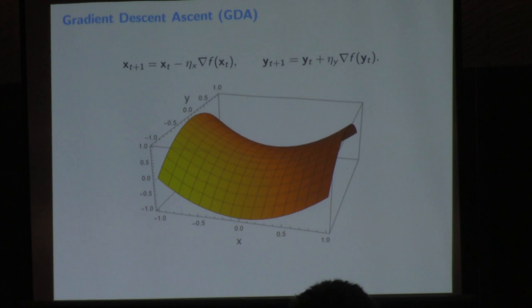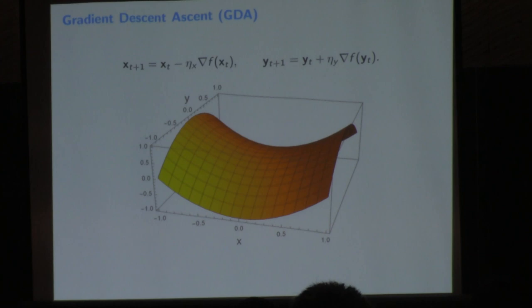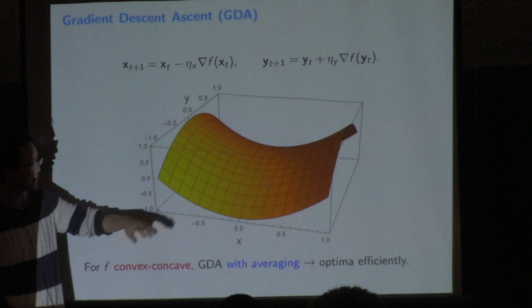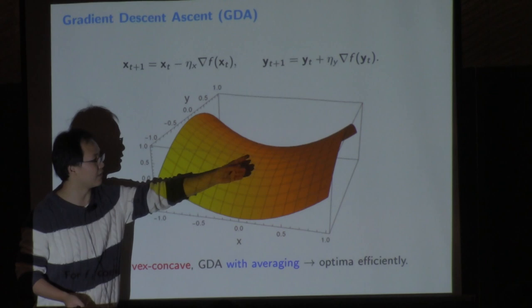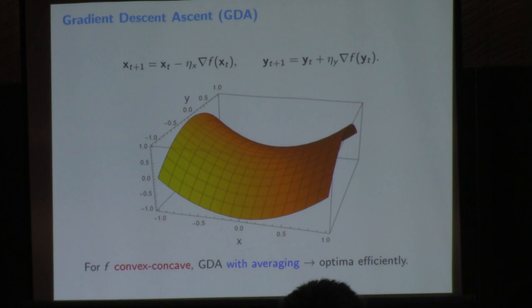For minimax optimization, there is a basic algorithm analogous to gradient descent called gradient descent ascent (GDA). Because we have two agents — one minimizing, one maximizing — X as the min player does gradient descent while Y as the max player does gradient ascent. In the convex-concave case this is provably correct: classical literature shows that GDA with averaging over all previous iterates will find the Nash equilibrium efficiently with convergence rates.